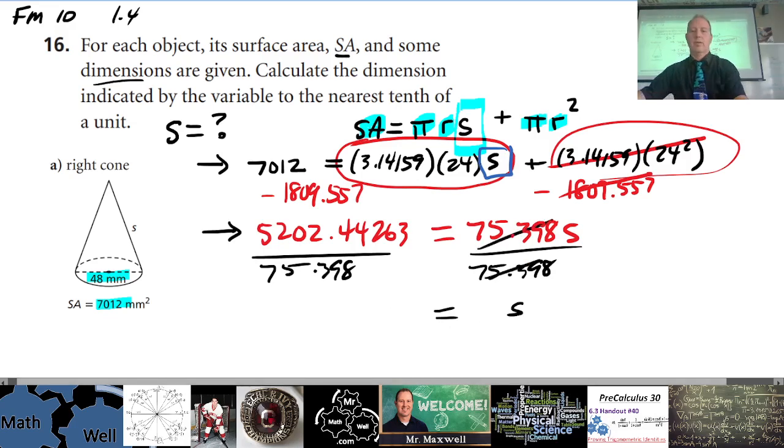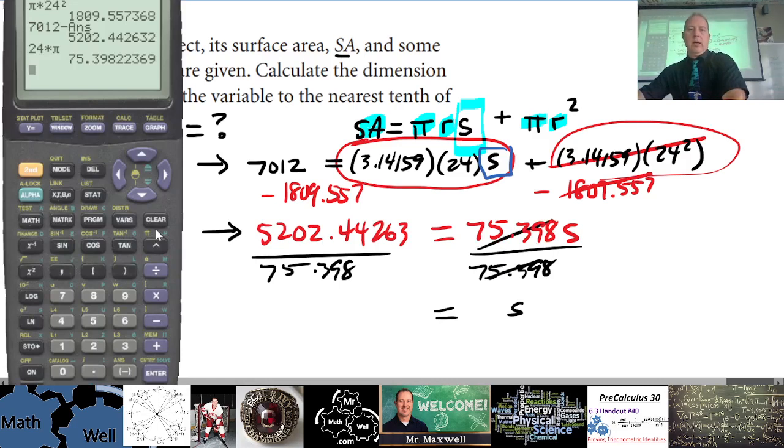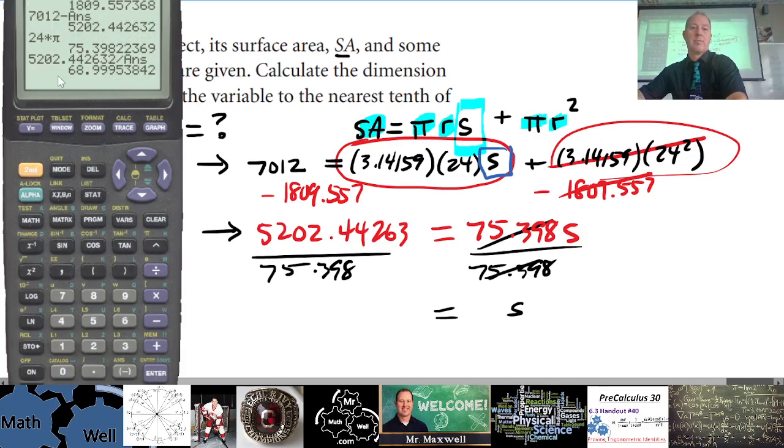So 5202.44263 divided by, and I'm going to use the previous answer so I get all the decimal places, divided by answer equals. So I get 68.999, or that's 69.0. 69.0, nearest tenth of a unit.